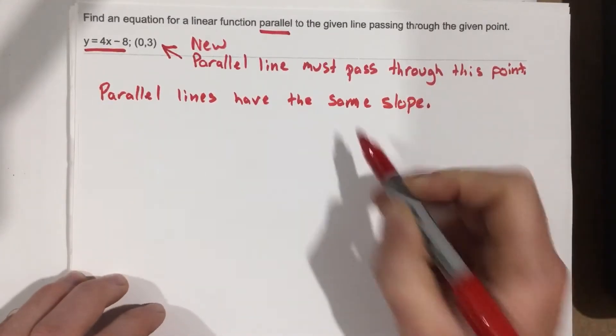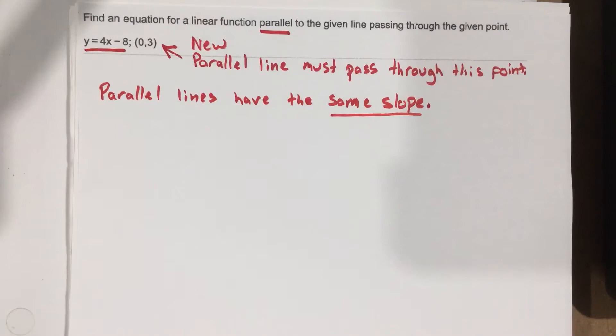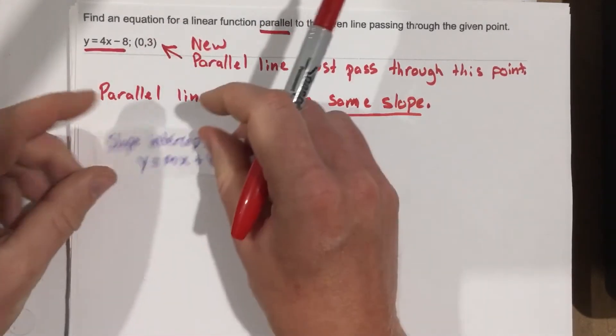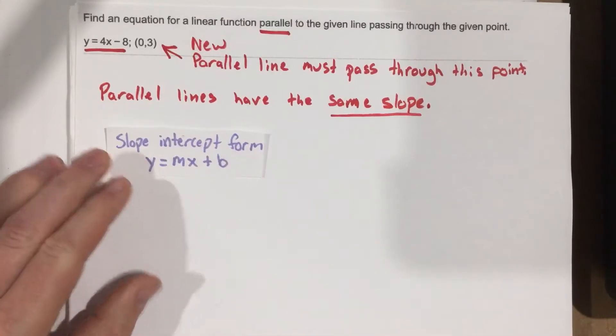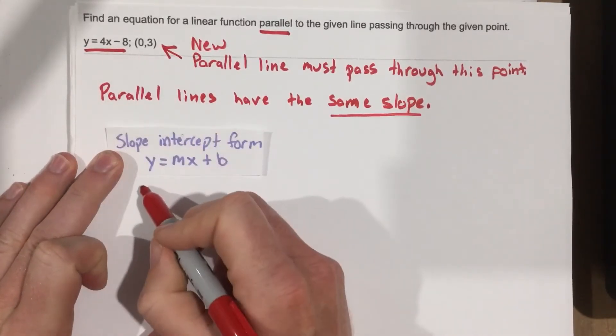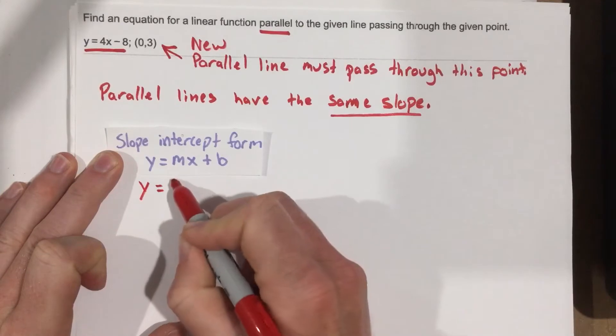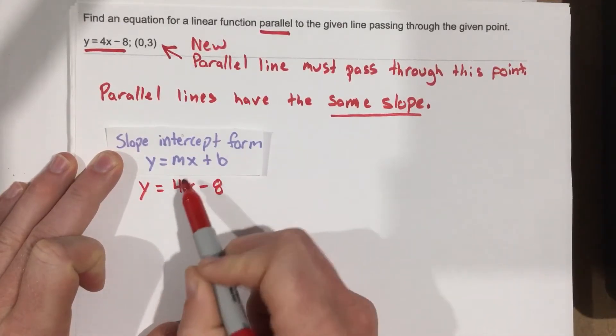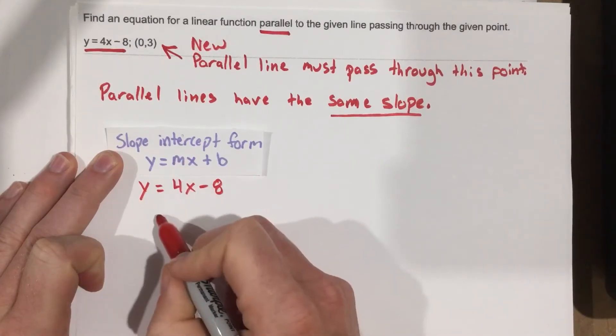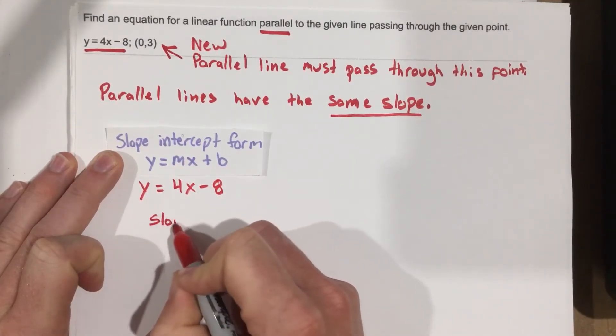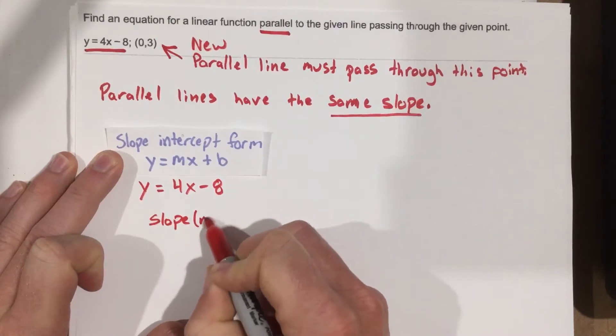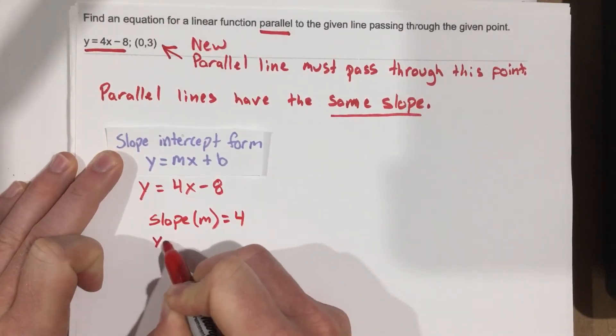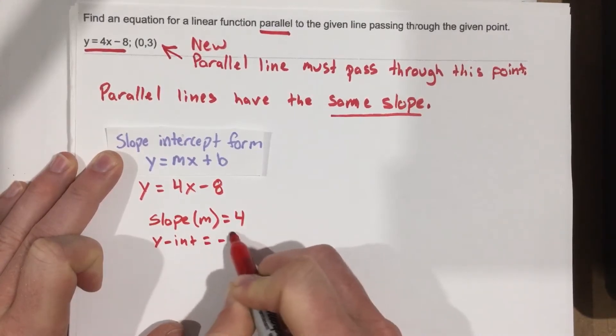So if we know that they have the same slope, which is important, we can look at slope intercept form. Because if you notice, y equals 4x minus 8, that is slope intercept form. So when we look at this equation, y equals 4x minus 8, we know that the slope m equals 4, and the y-intercept is negative 8.